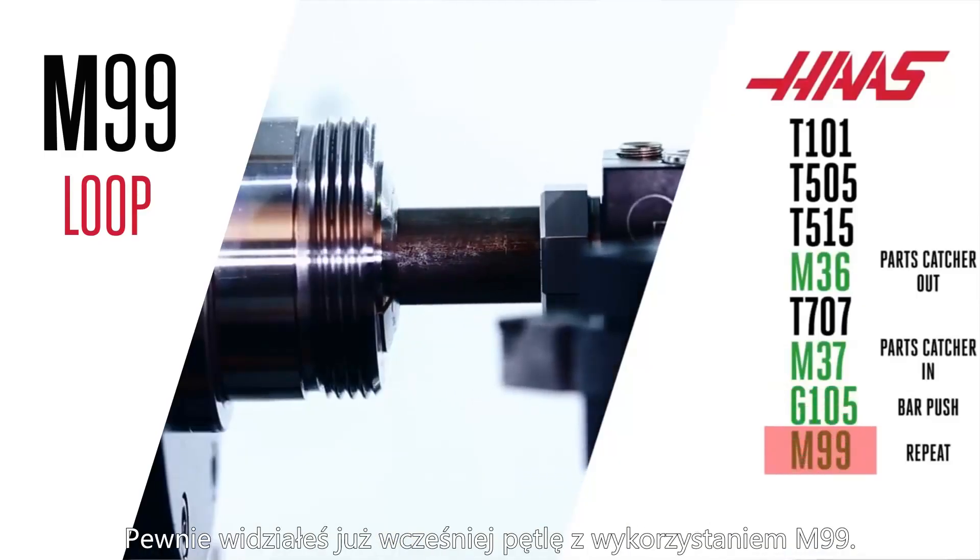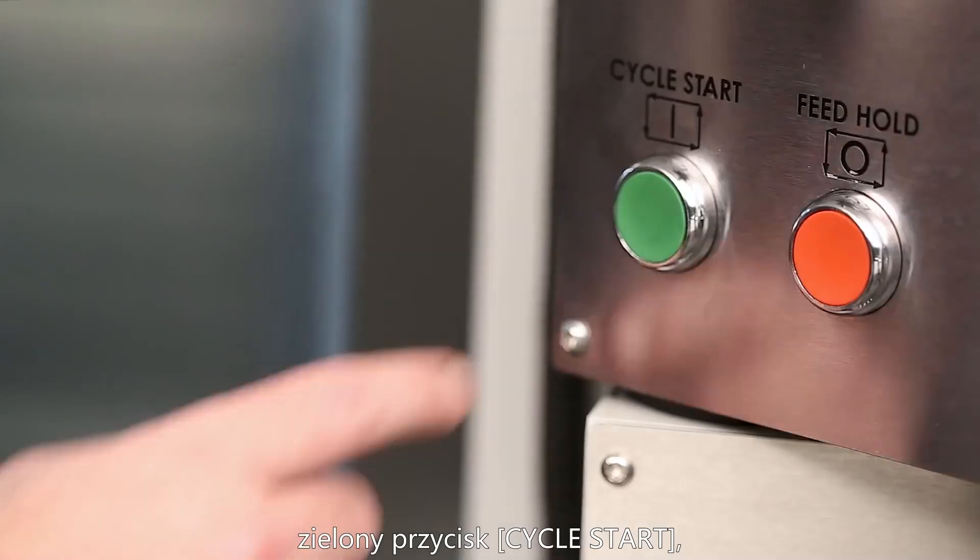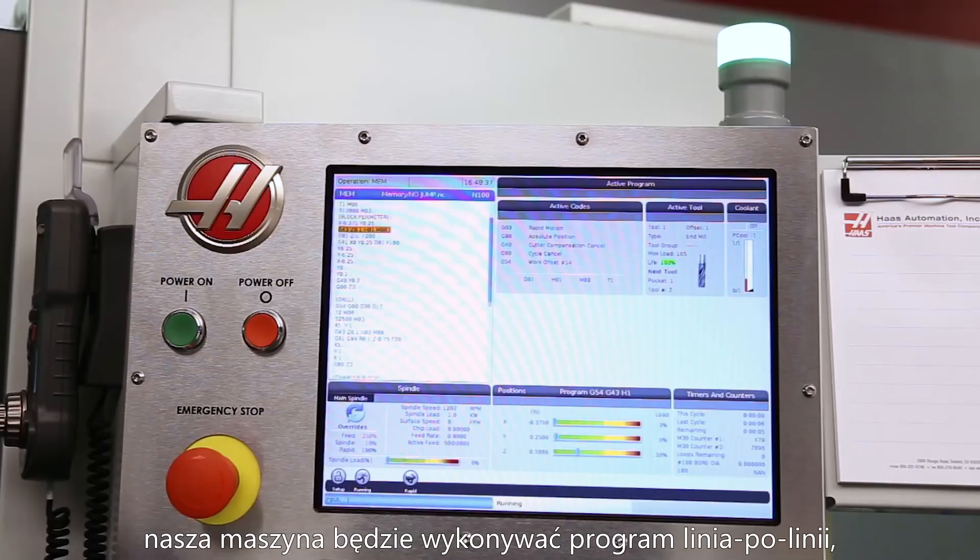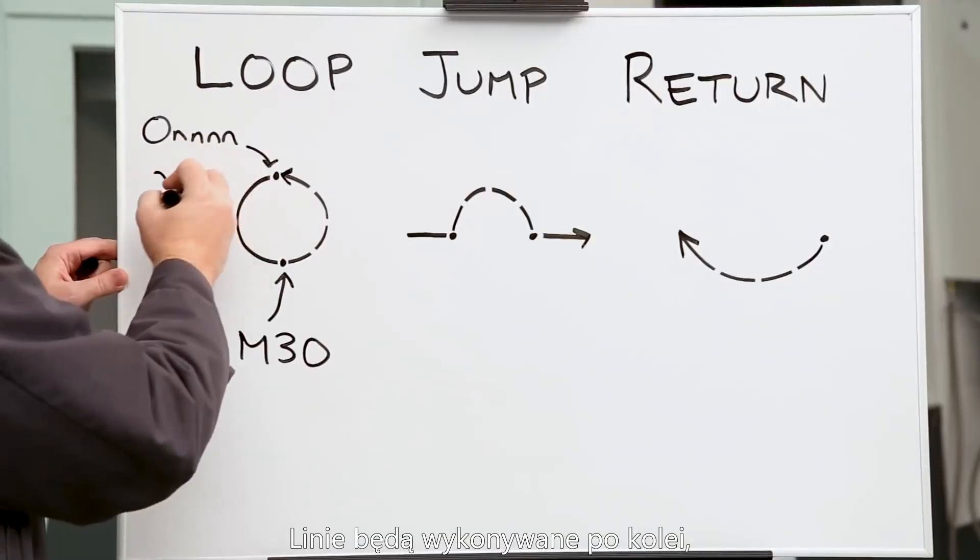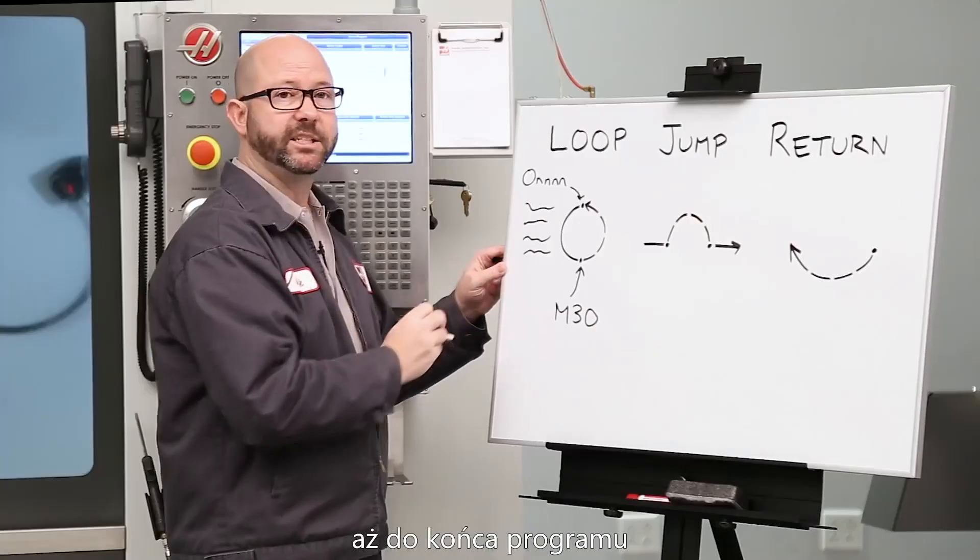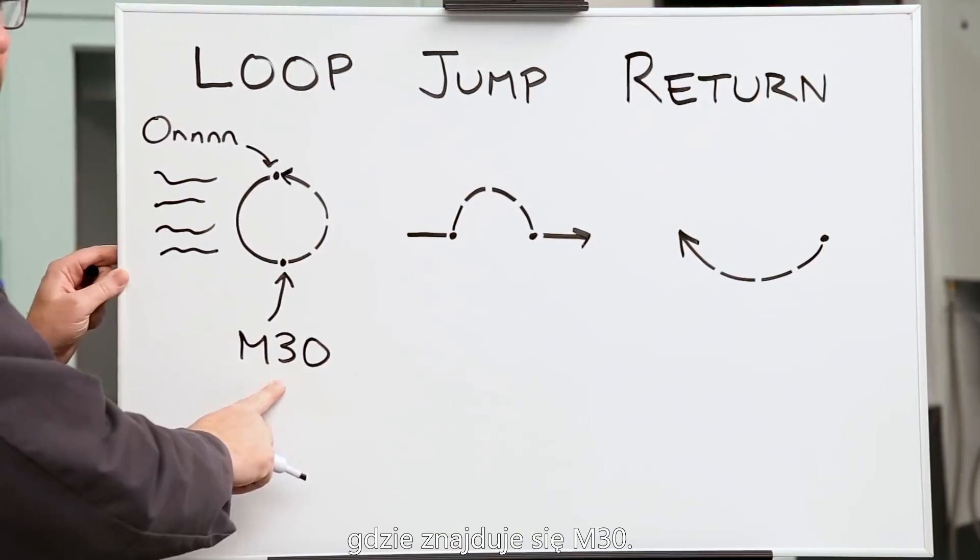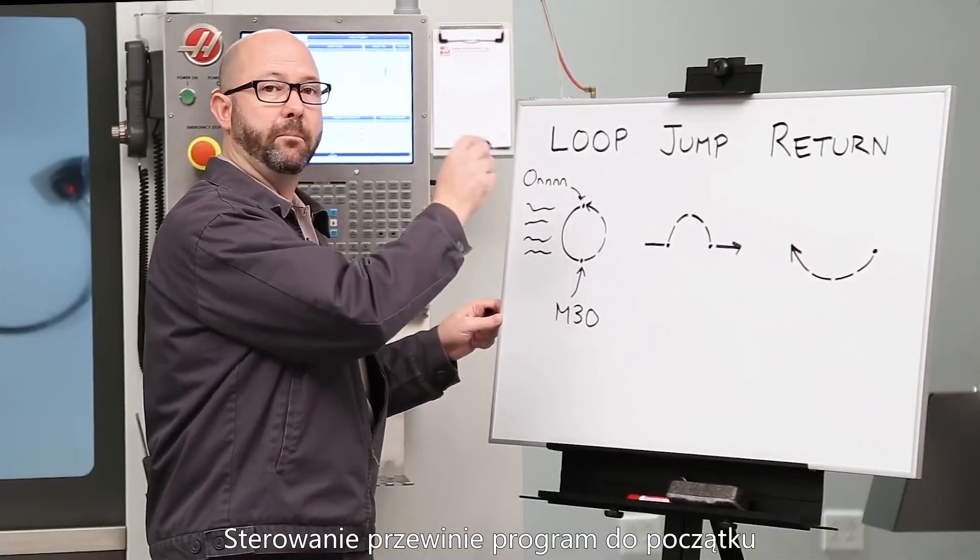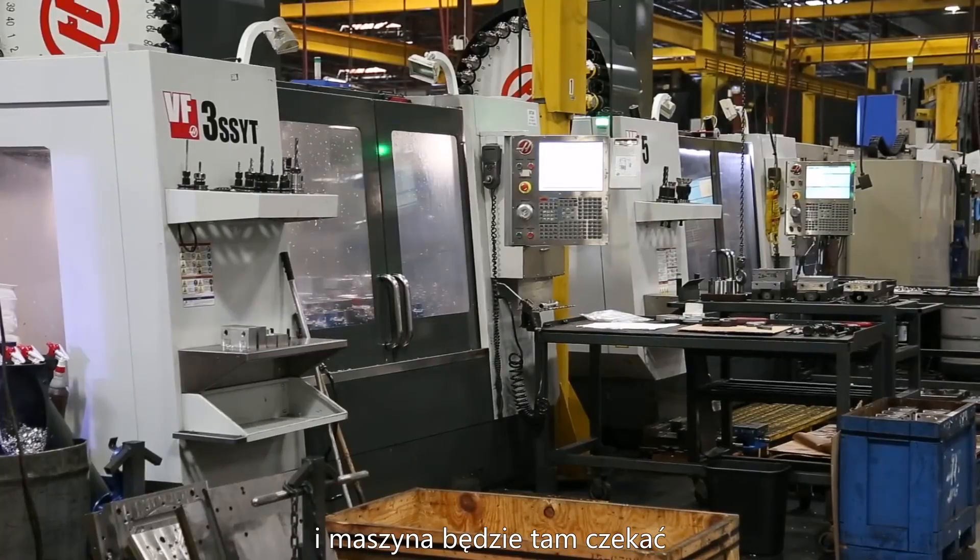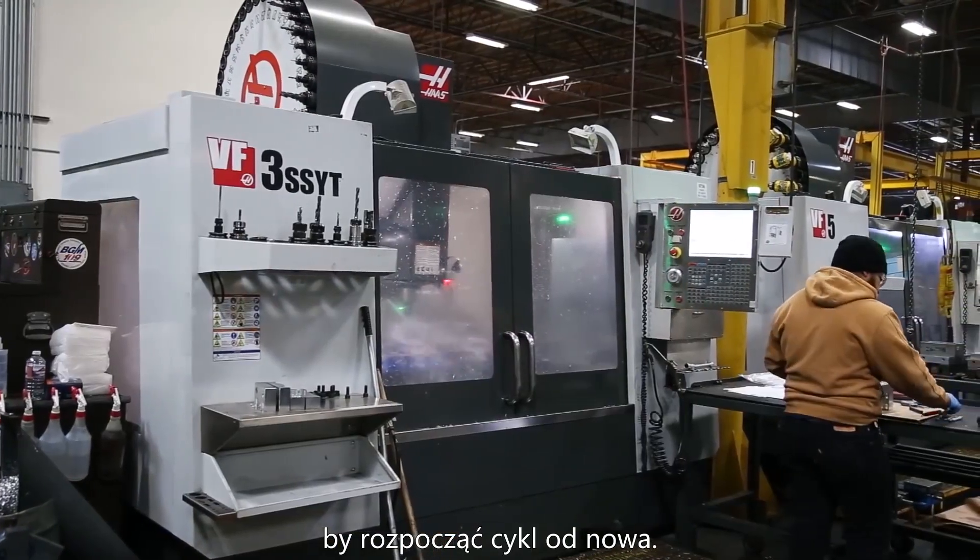You might have seen an M99 loop before. In a typical program, when we press the green cycle start button, our machine starts running the code line by line, starting with the O number at the top. It executes one line at a time until it gets to the bottom of our program where we've got an M30. When the M30 is reached, the machine stops all motion, the control resets the program back to the top, and then the machine sits and waits for us to press the green button to start the entire cycle all over again.